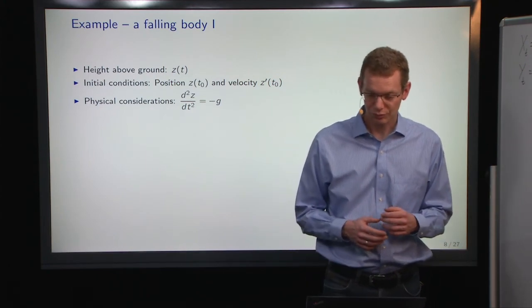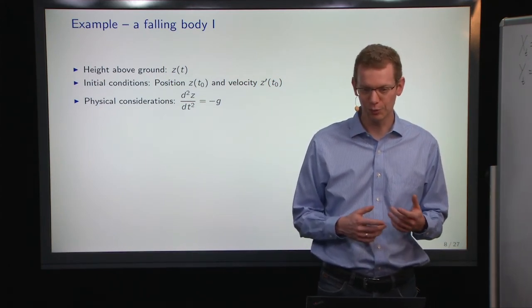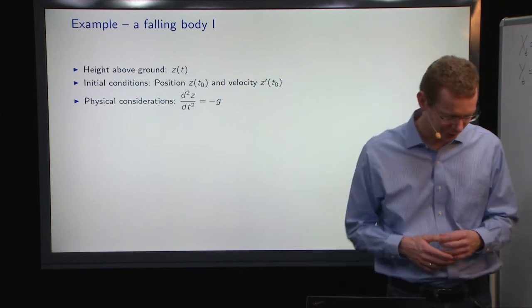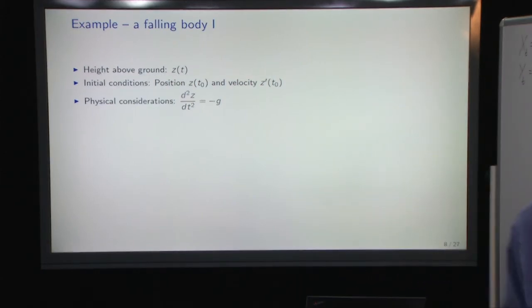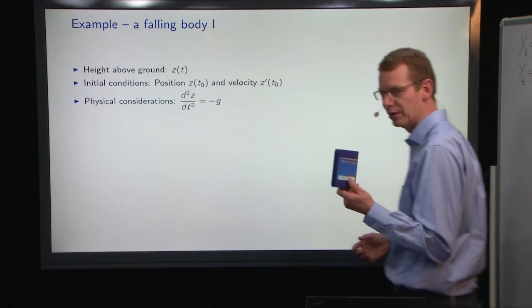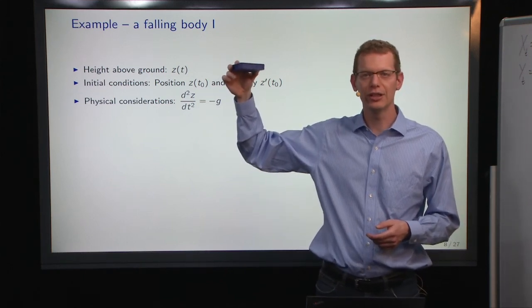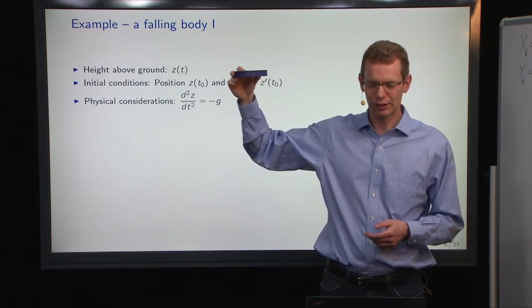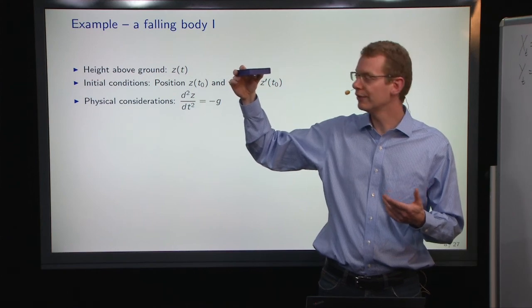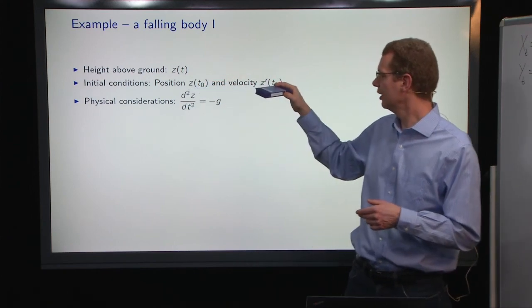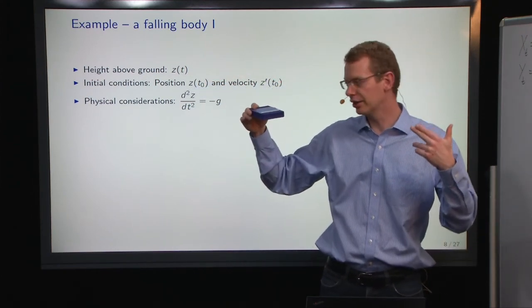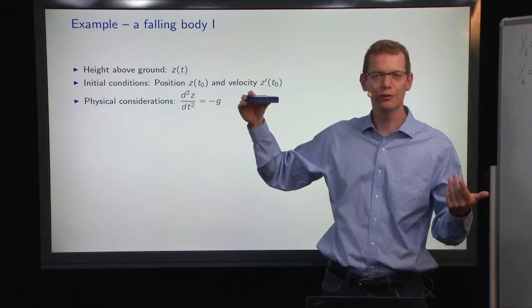Another example is a classical example, a falling body. Let me see if I can find anything here. We could look at this box here. Basically what you have is that you have it sitting at some location, some height, and then you have the initial condition which contains the position and the velocity, and then you know the physics about this.